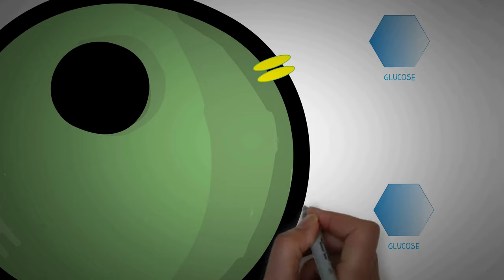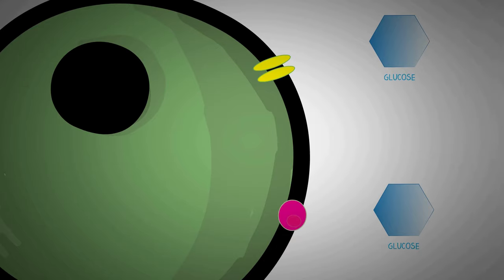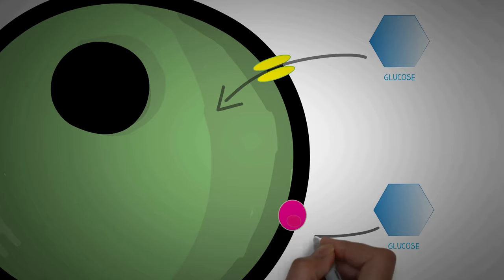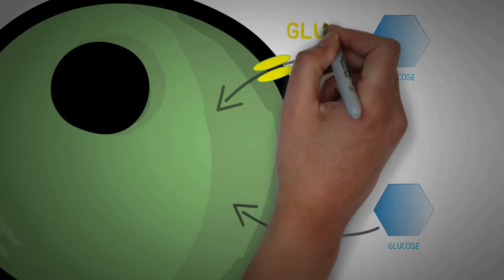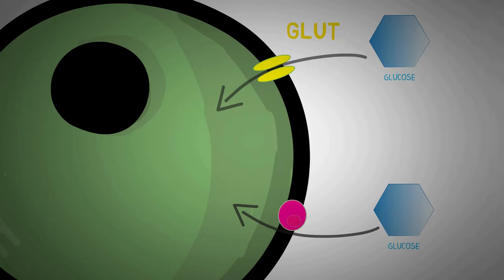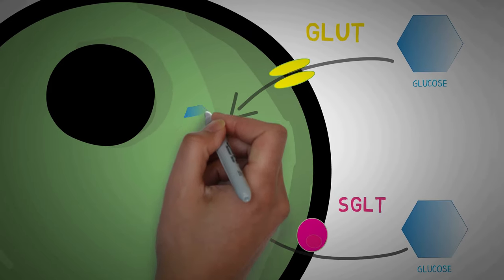Glucose is transported inside the cells by special protein channels in the membrane of these cells. These channels are of two types: the GLUT receptors and the SGLT transporters. There are different types of GLUT and SGLT channels present in different types of cells in the body, and they behave differently because different types of cells have different requirements for glucose.